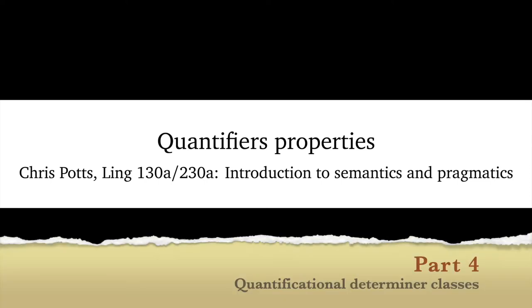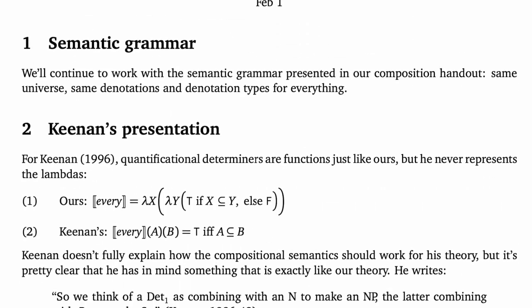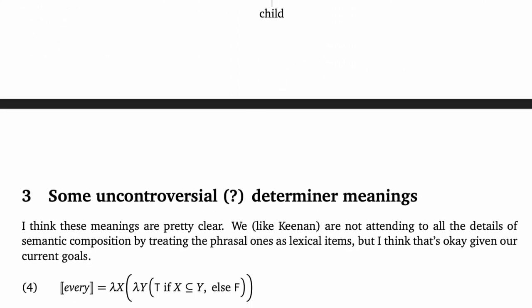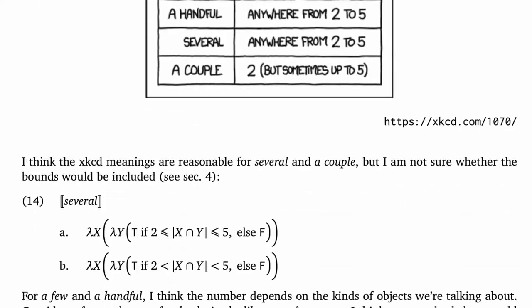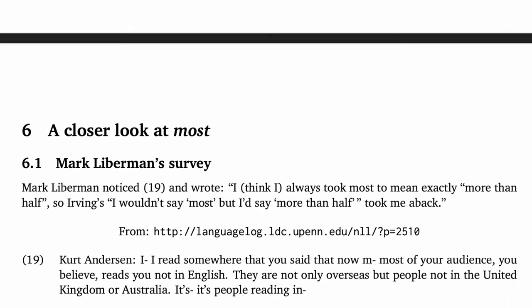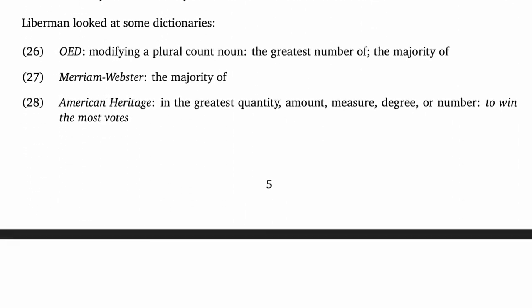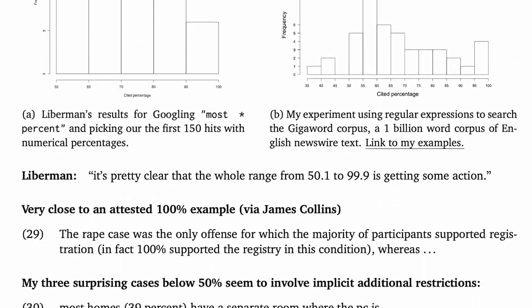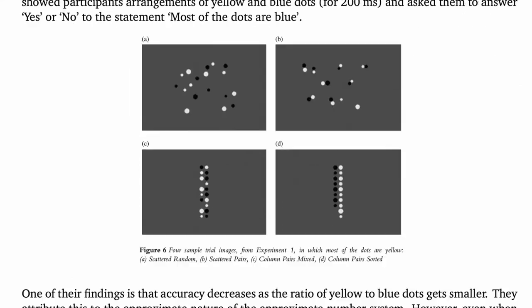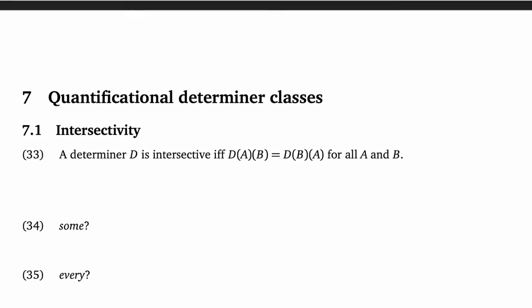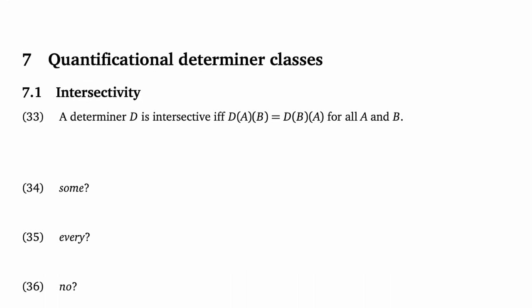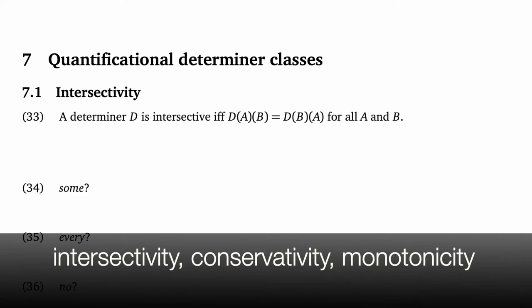Hi, Chris Potts here. This is the fourth in our series of screencasts on quantifier properties. The first screencast set the stage and connected our theory with Keenan's. The second was focused on context dependence and lexical uncertainty, and the third reviewed a diverse case study for the determiner most. With this screencast, we're going to return to the Keenan article, in particular to the properties of determiners that Keenan identifies and explores. We'll focus on three: intersectivity, conservativity, and monotonicity.